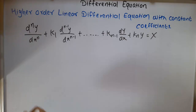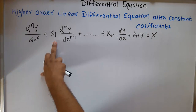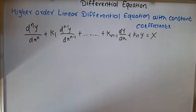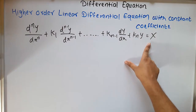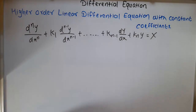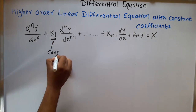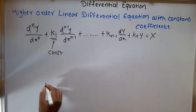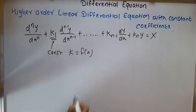We have the equation d^n y/dx^n plus k1 d^(n-1)y/dx^(n-1) plus ... plus k_(n-1) dy/dx plus k_n y equal to x. This is the higher order differential equation, where k are constants and x is a function of x.